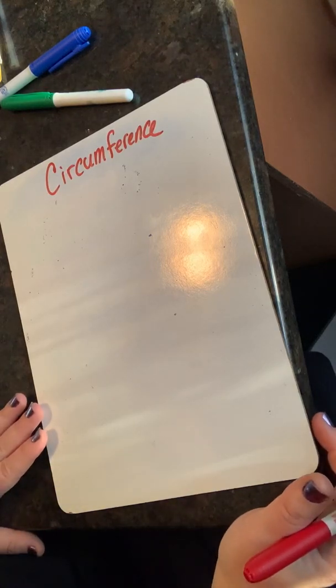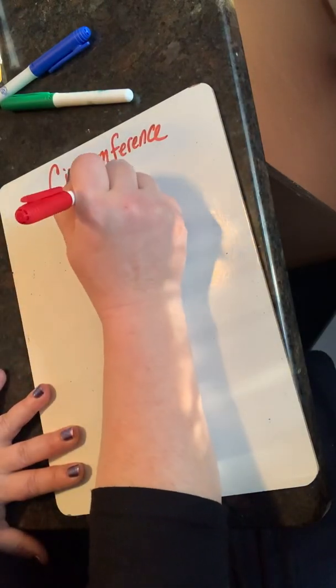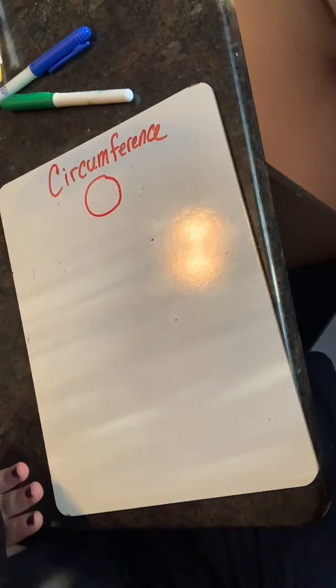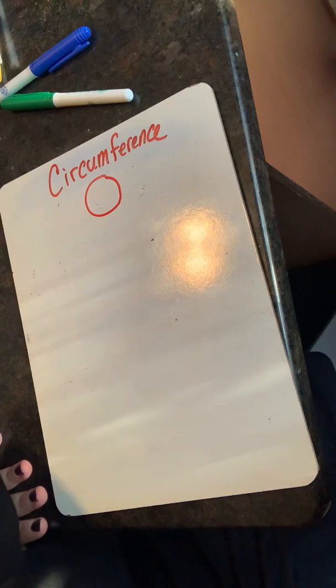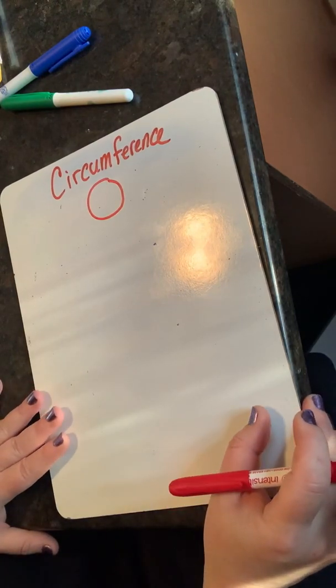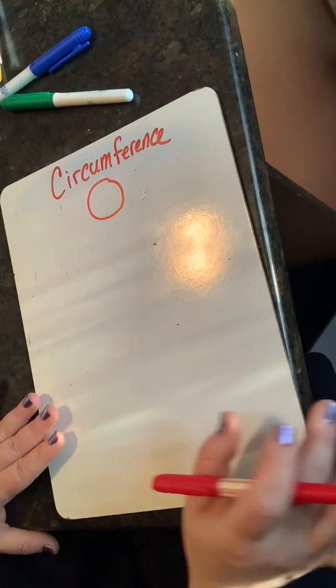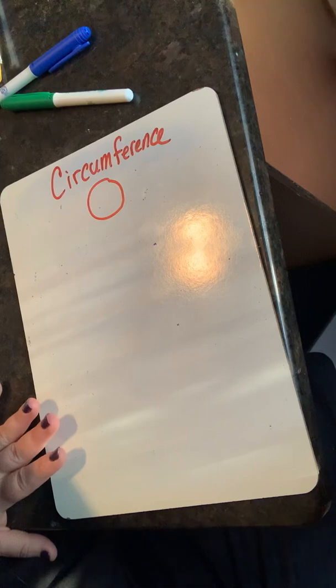Today, we're going to talk about circumference of a circle. Hoy vamos a hablar sobre la circunferencia de un círculo. Circumference is the distance around a circle. La circunferencia es la distancia alrededor de un círculo.